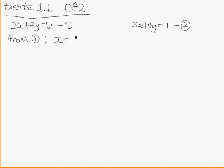what I get is (12 - 3y)/2, which simplifies to 6 - (3/2)y. I rewrite this as equation 3.